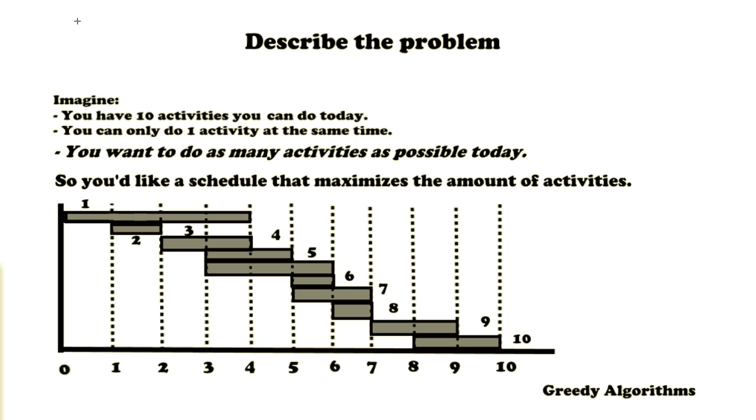So let's start with describing the problem. Imagine this: You have 10 activities you can do today. You can only do one activity at the same time. You want to do as many activities as possible today. So this is the key. Therefore you want a schedule that maximizes the amount of activities.